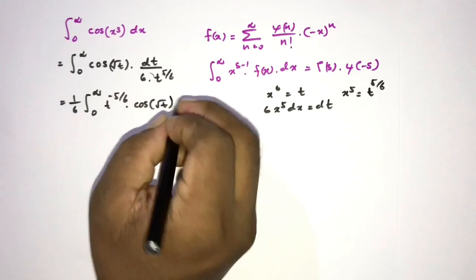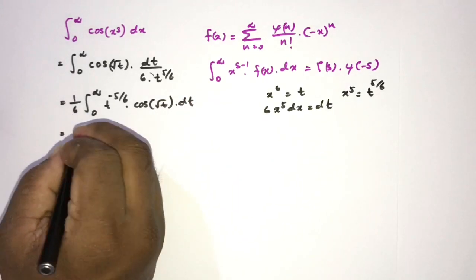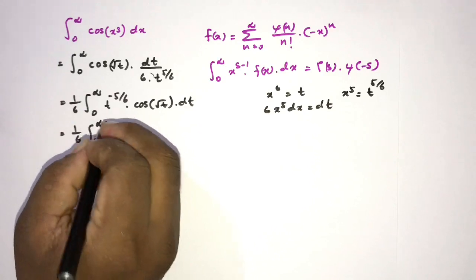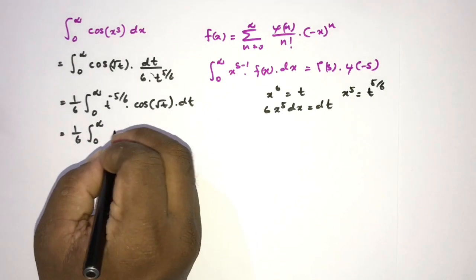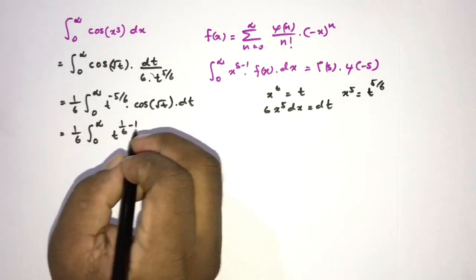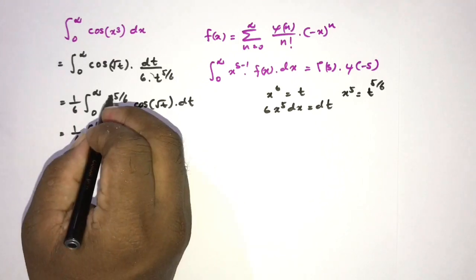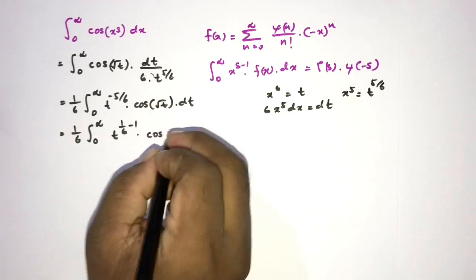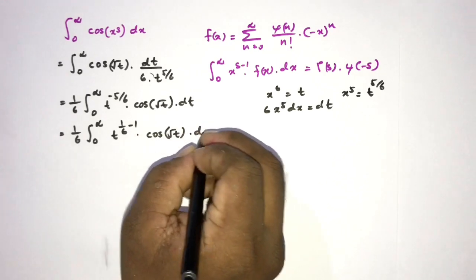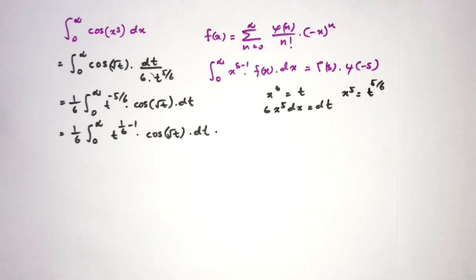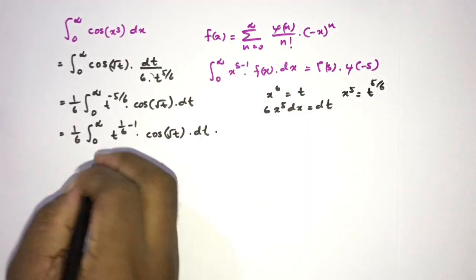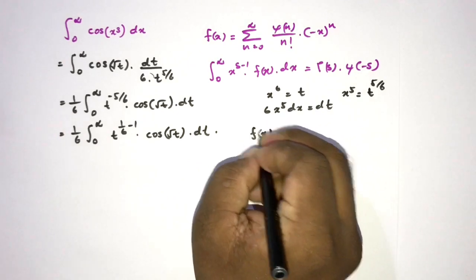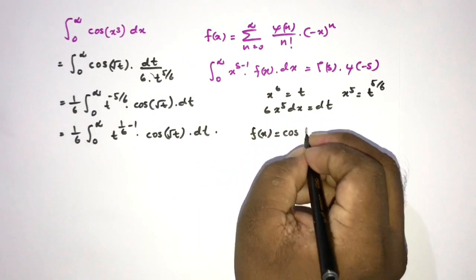We can rewrite t^(−5/6) as t^(1/6 − 1), so the integral is (1/6) times the integral from zero to infinity of t^(1/6 − 1) cosine(√t) dt. This matches the Mellin transform form x^(s−1) f(x), with s = 1/6 and f(t) = cosine(√t).